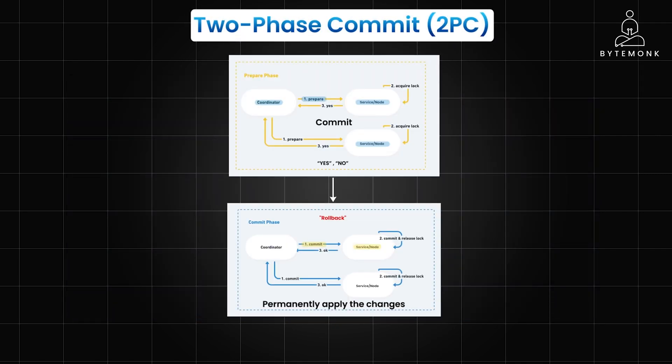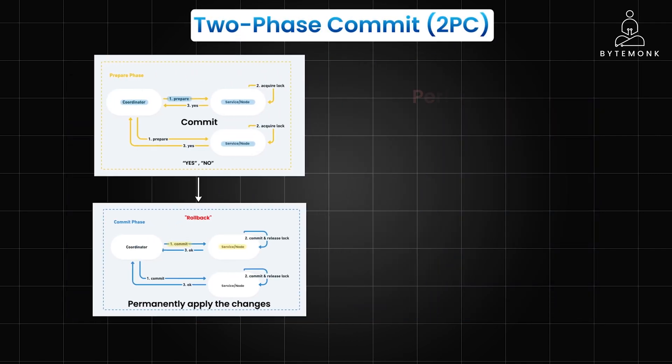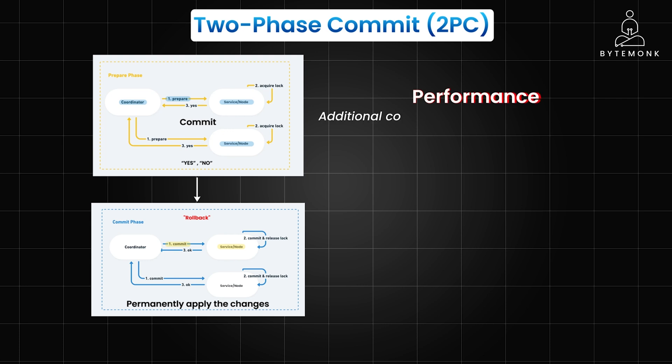In real life, you won't have to implement 2PC from scratch unless you are part of an infrastructure team building something new. Even then, it is highly likely that you will leverage open-source tools like ZooKeeper to make things easier, so you don't reinvent the wheel. However, the additional communication and coordination steps in two-phase commit can introduce latency and reduce overall system performance.